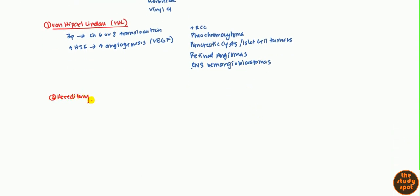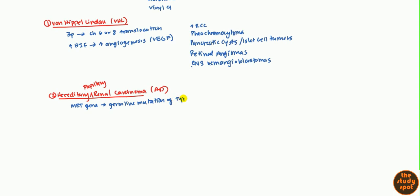The next one is hereditary papillary renal carcinoma. This is an autosomal dominant condition, a mutation in the MET gene. This is a germline mutation which causes problems in the tyrosine kinase domain, giving you unregulated growth. Typically what patients will have is bilateral multifocal papillary renal carcinoma on both sides in multiple positions.